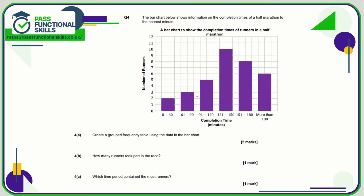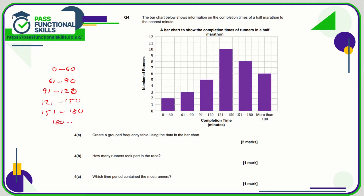Question four: we need to create a grouped frequency table using the data. We'll use zero to sixty, sixty-one to ninety, ninety-one to one hundred and twenty — and it's important we don't write one hundred and twenty again as the start of the next group, otherwise we'd have an overlap — one hundred and twenty-one to one hundred and fifty, one hundred and fifty-one to one hundred and eighty, and then one hundred and eighty plus.